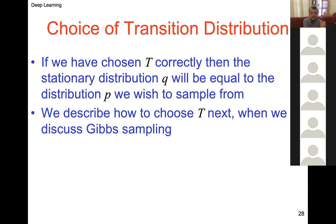Choice of transition distribution: the MCMC discussion refers to a transition from one state to the next using a transition probability distribution T. Gibbs sampling is precisely one way of defining that T. The distribution from one state to the next is defined by the conditional distribution — given the previous set of values except for one variable, we draw from that conditional to get that value.